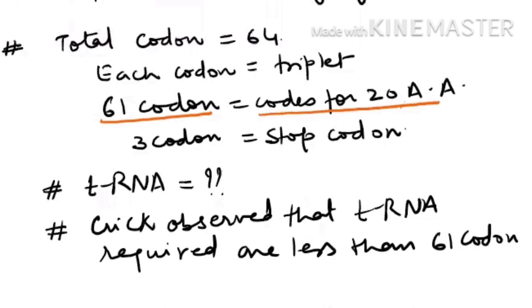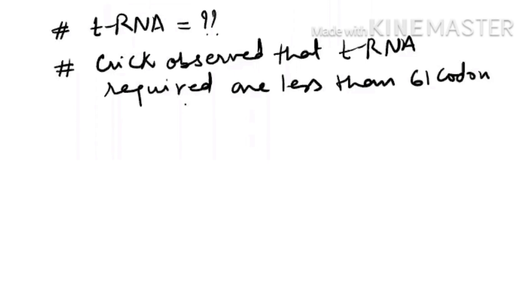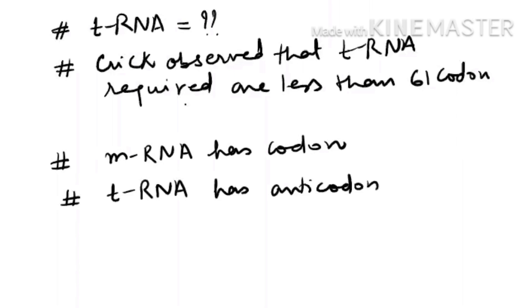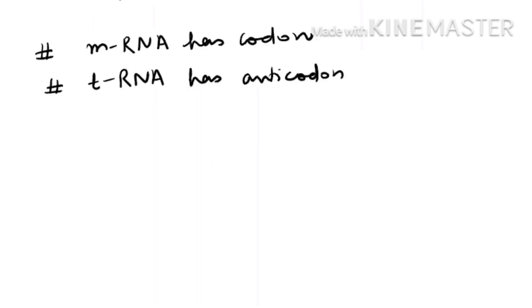It was then asked: how can fewer than 61 transfer RNAs carry out all the translation work efficiently? As we know, messenger RNA contains codons, and to read those codons, transfer RNA has an anticodon. The transfer RNA has an anticodon to read the codon and also carries the amino acid. Let us assume this is your messenger RNA, written five-dash to three-dash, and this is a codon sequence — UUC, which codes for phenylalanine.